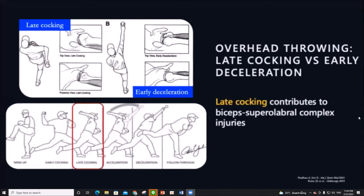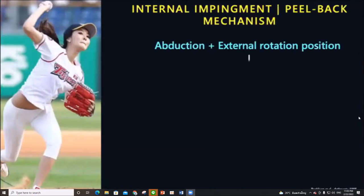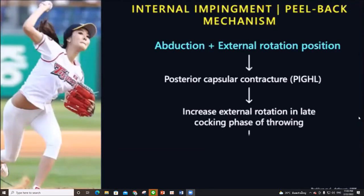In chronic cases, the stability of the biceps anchor and pattern of injury are dependent on shoulder position during the phase of overhead throwing, particularly during the late cocking phase.